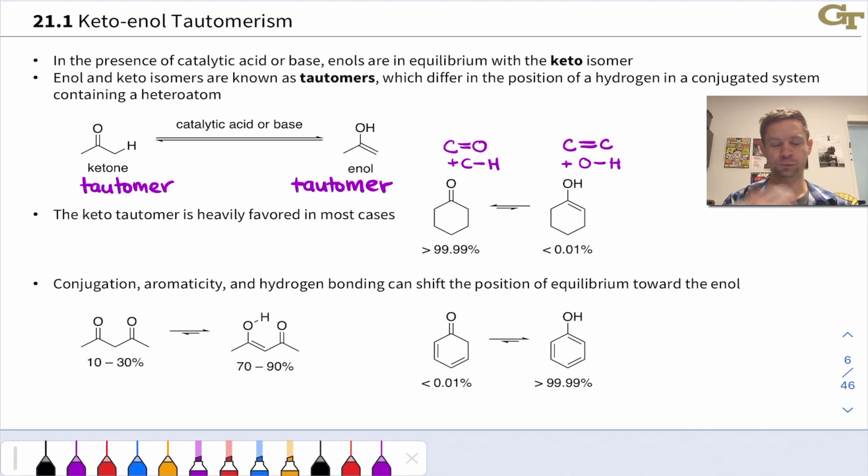The enol form is there only to the tune of 0.01% or less, so massive favorability for the keto form. To rationalize this, notice the difference in bond strengths: we have a C=O double bond and a C-H single bond in keto form, and a C=C double bond and an O-H single bond in the enol form. If you look at bond dissociation enthalpies, the C=O double bond and C-H single bond collectively are stronger than the C=C double bond and O-H single bond. This is why most normal ketones and aldehydes favor the keto form.